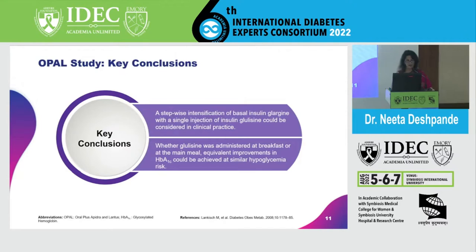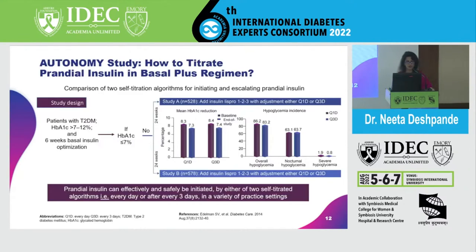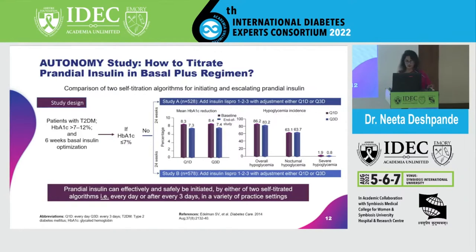This is the AUTONOMY study, which compares two self-titration algorithms for initiating and escalating prandial insulin. Patients with type 2 diabetes with an A1C of 7 to 12 are optimized with basal insulin, and if A1C does not come below 7, they are assigned to either study arm with addition of insulin lispro once, twice, or thrice daily — with adjustment going from one to three times. Prandial insulin can effectively and safely be initiated by either of two self-titrated algorithms — every day or every three days — in a variety of practice settings.